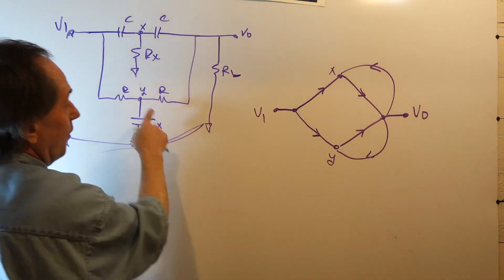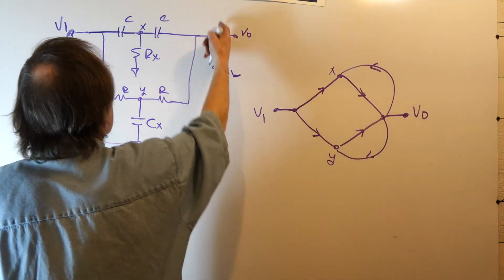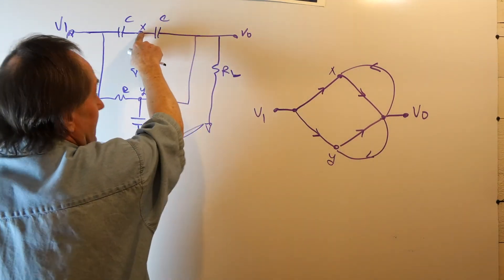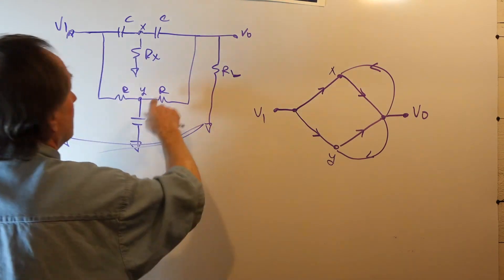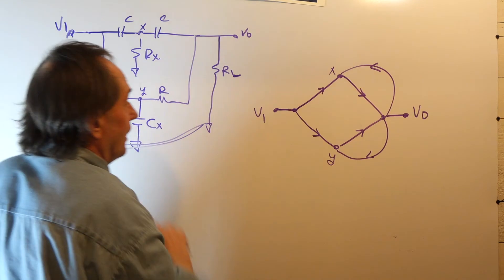And then from V1 to Y, we're going this way. And from Y to the output, we're going here. But then the outputs also feed back through this capacitor to X. And from the output, it feeds back to node Y through R.